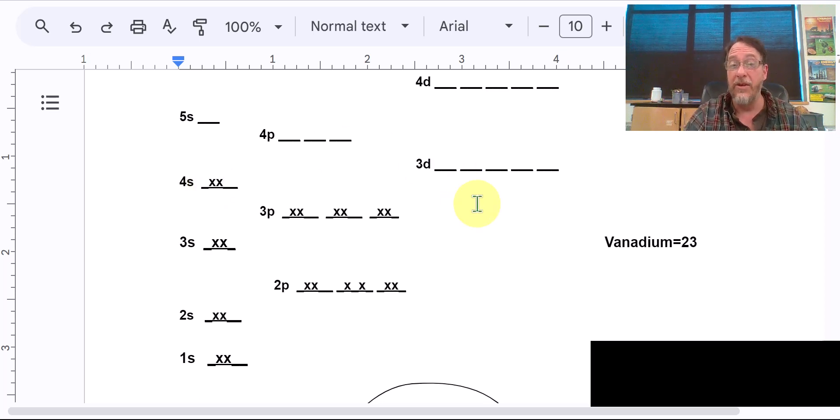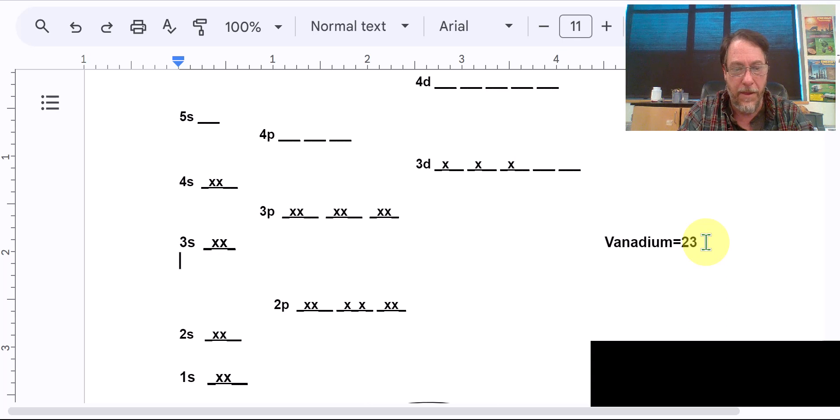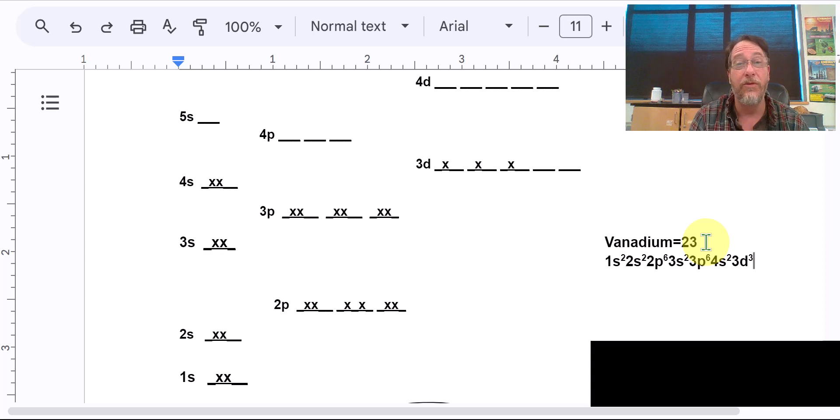And then now we're into the D orbitals, and that's kind of what I wanted to talk about a little bit next: 1, 2, 3. So 1S2, that's Ctrl plus on your keyboard by the way, 2S2, 2P6, 3S2, 3P6, 4S2, and 3D3. And so that's how you fill in the orbitals for a larger molecule.